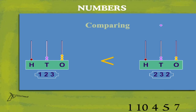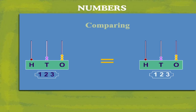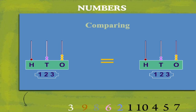The first now is one hundred and twenty three and the second is also one hundred and twenty three. We put an equal to sign now and say one hundred and twenty three is equal to one hundred and twenty three.